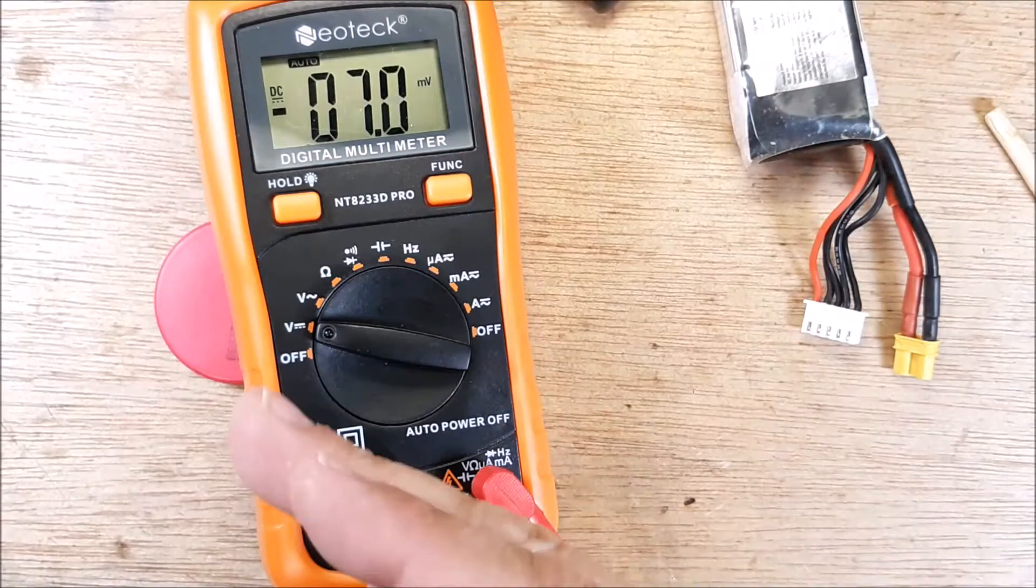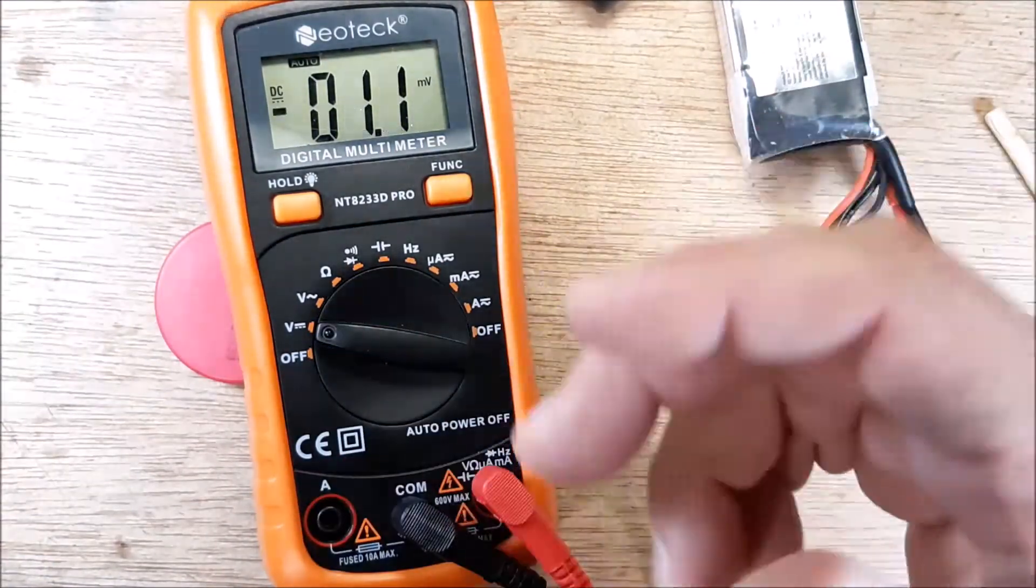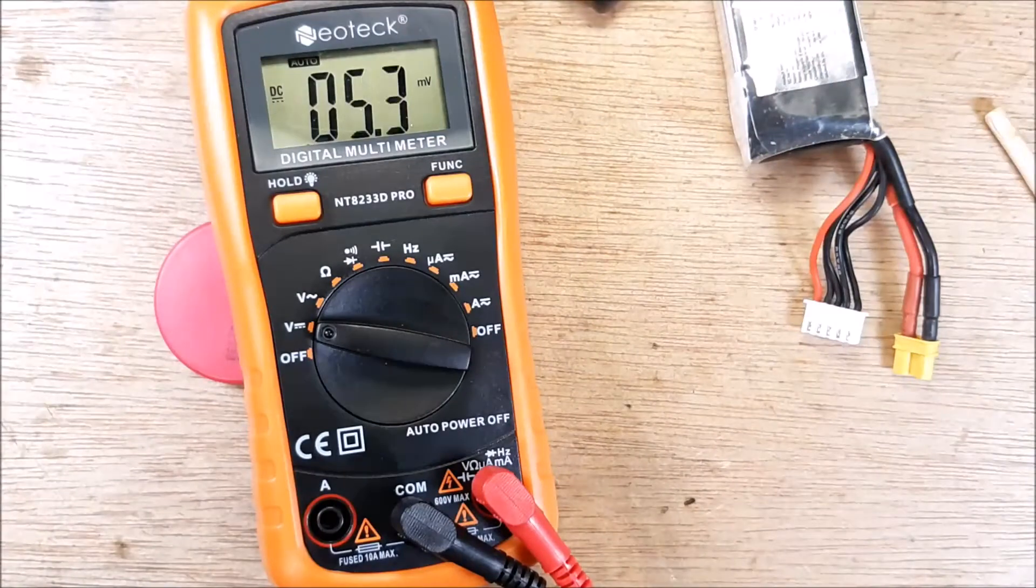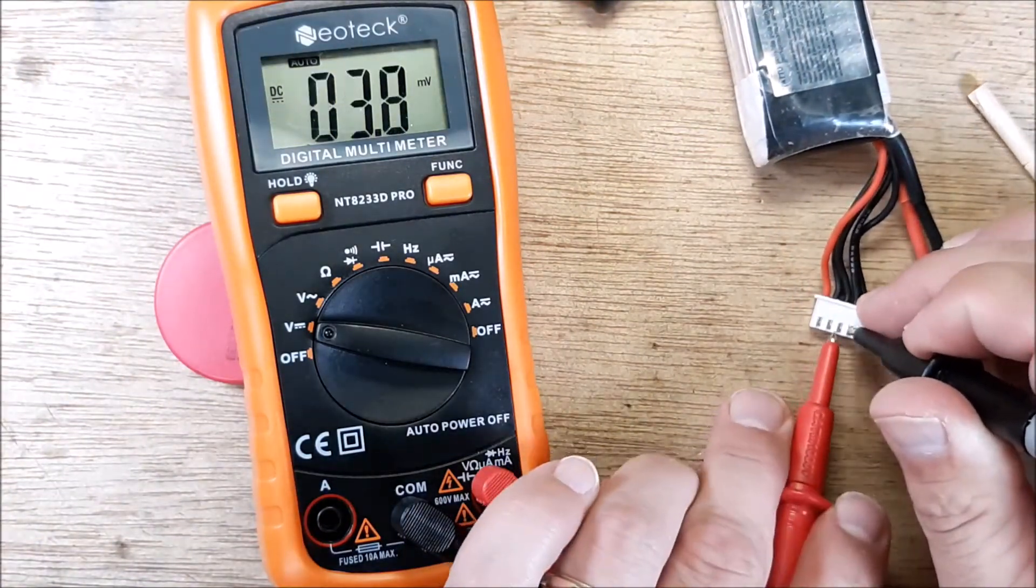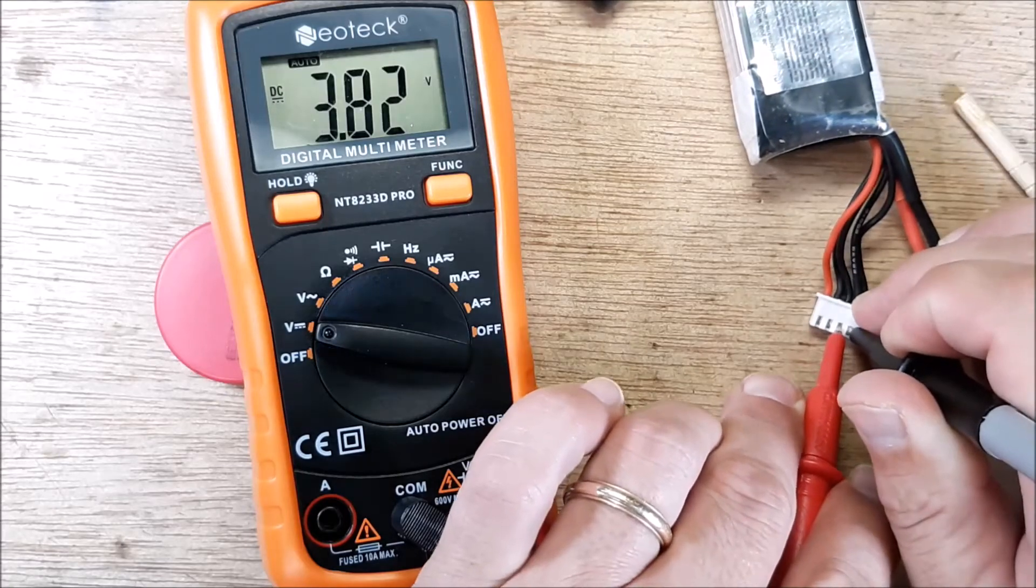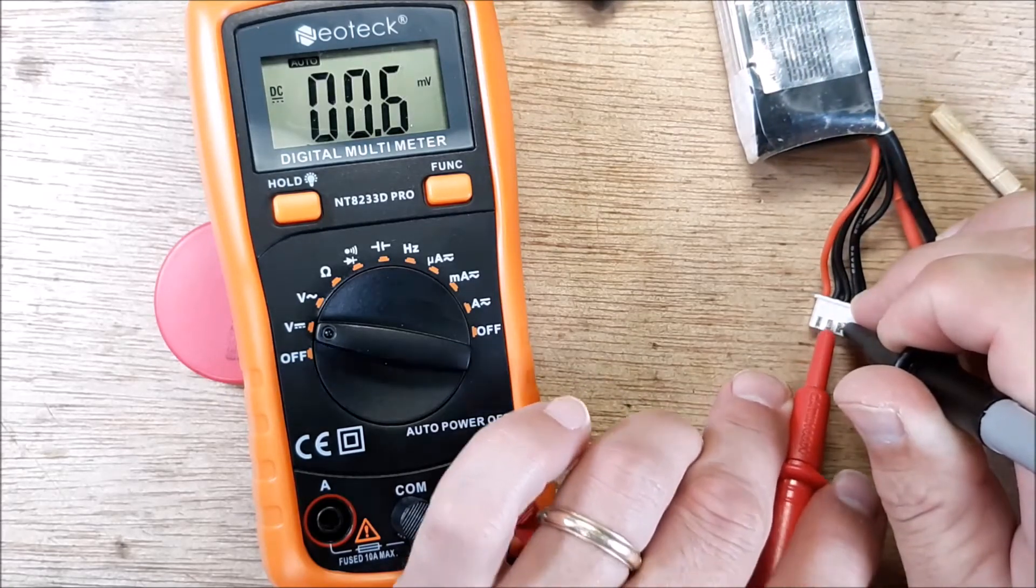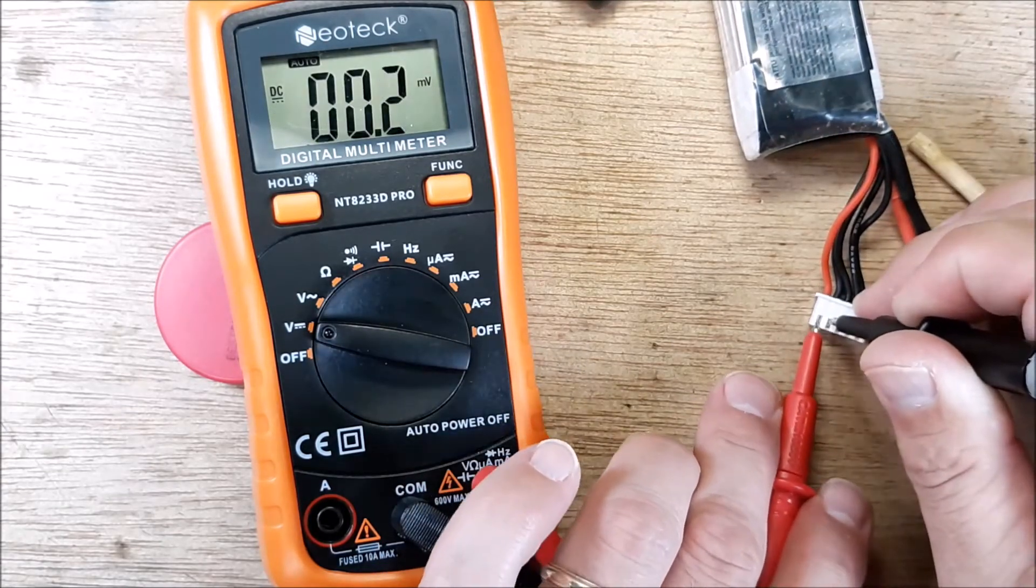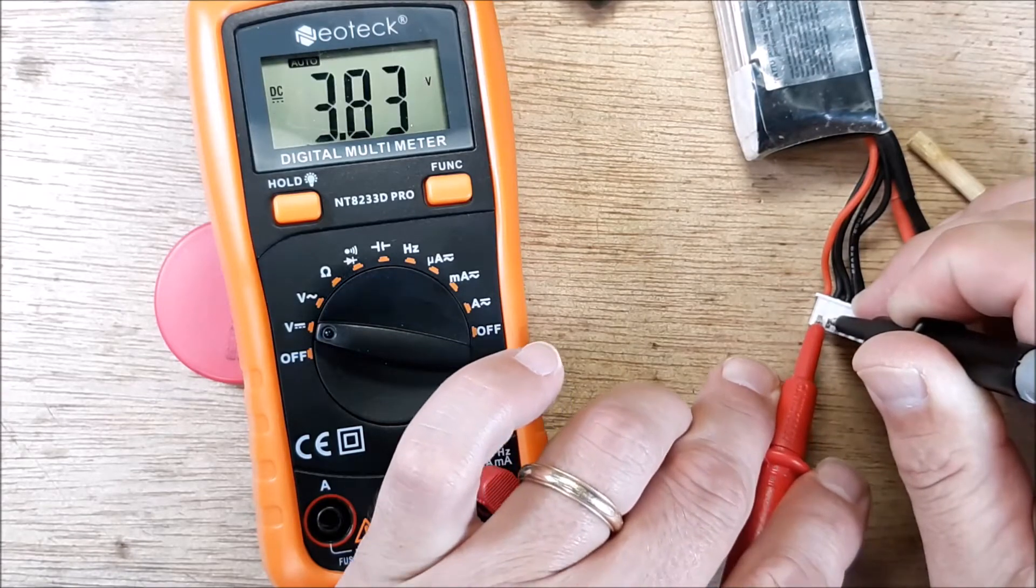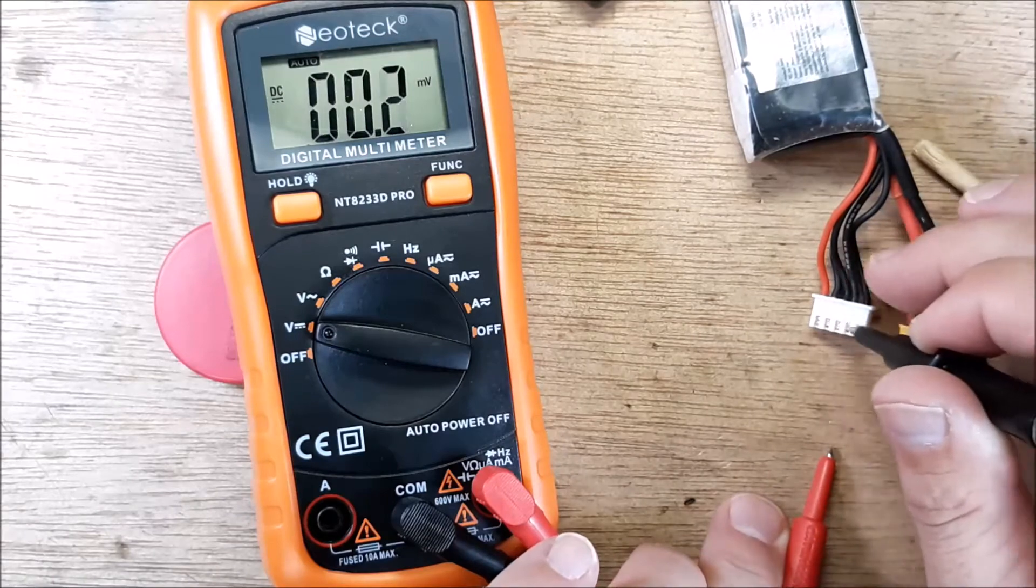As you add those up you can do the math and divide them. If you want to check each individual cell you can go in between here, that's 3.82. Come in here, 3.83. Come in here, make sure you don't touch those leads together, 3.83. You can check individual cells.